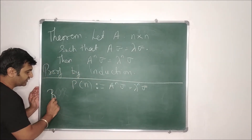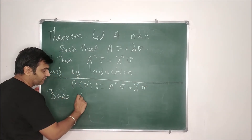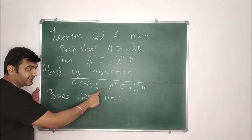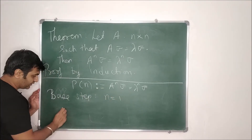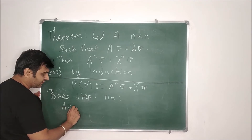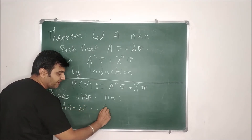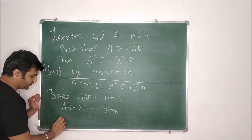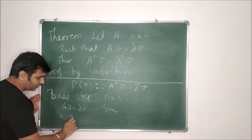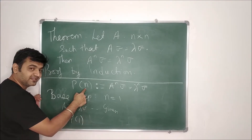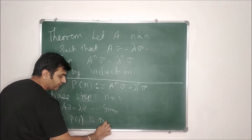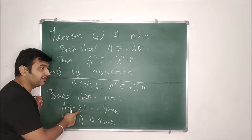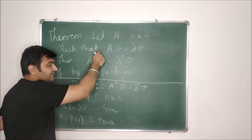We first prove the base step for n = 1. Is P(1) true? Yes — A·V̄ = λ·V̄, which is already given to us. Therefore P(1) is true, because A·V̄ = λ·V̄ is given.